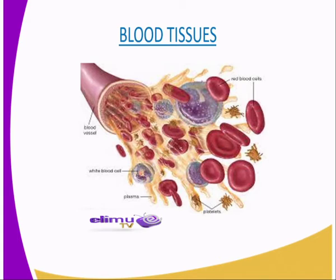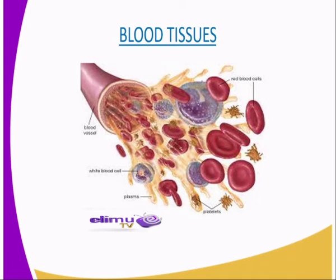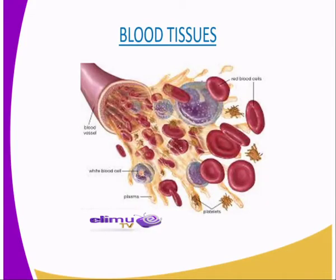We have other tissues known as blood tissues. As you are aware, blood tissues are made up of several components: we have the white blood cells, the red blood cells, the lymphocytes, the plasma, and the platelets. These are a combination of all those tissues. Blood tissue has several functions — for example, the white blood cells protect us from disease-causing organisms, and the red blood cells combine with hemoglobin to form oxyhemoglobin, which transports oxygen in the body.